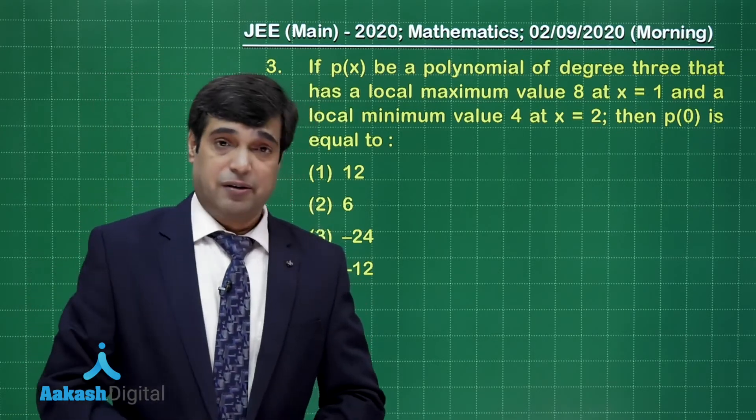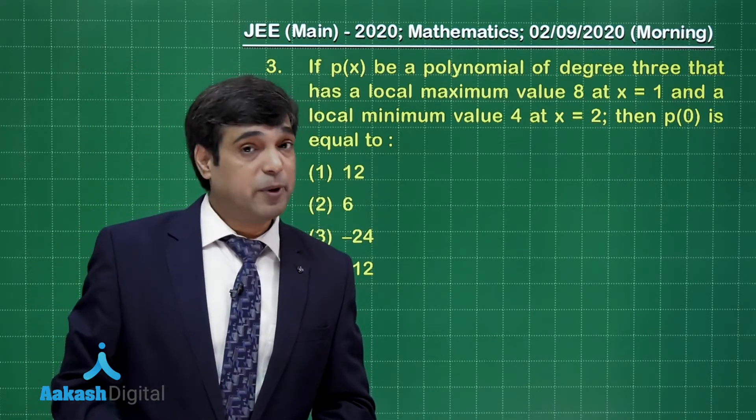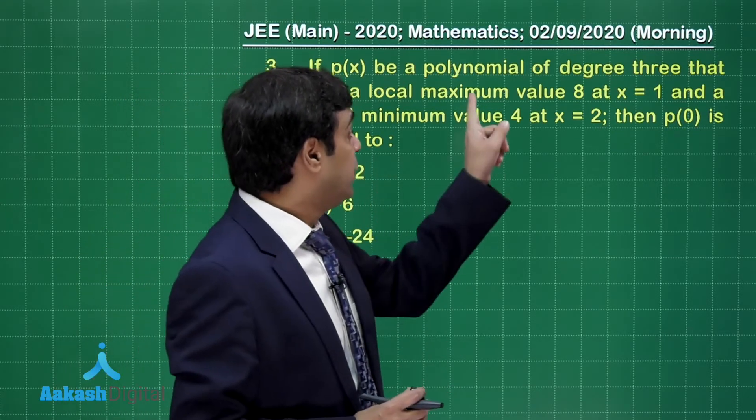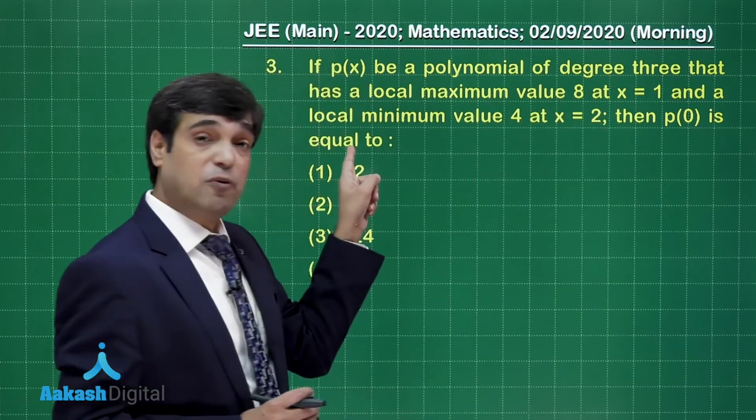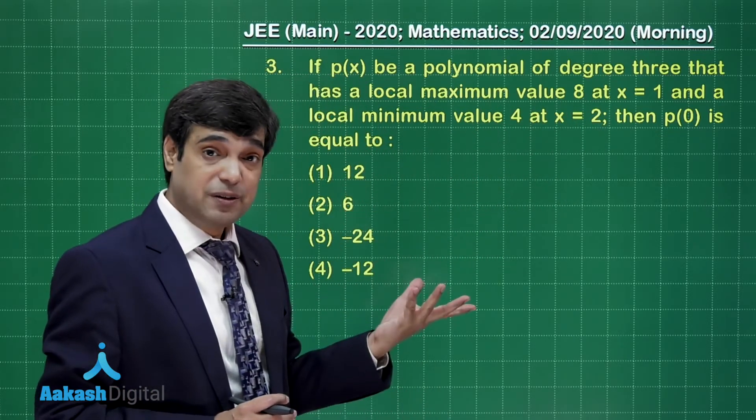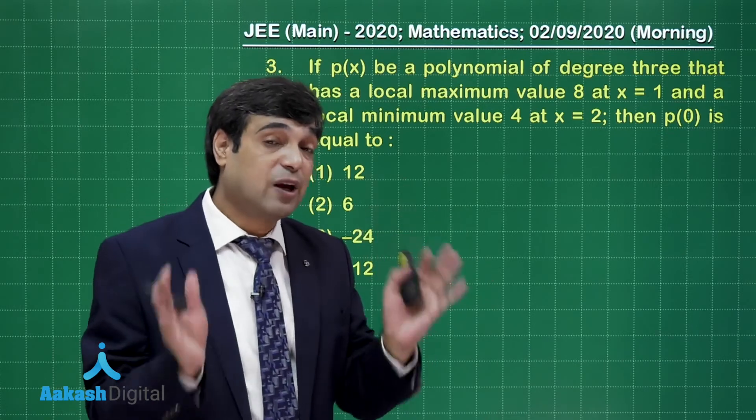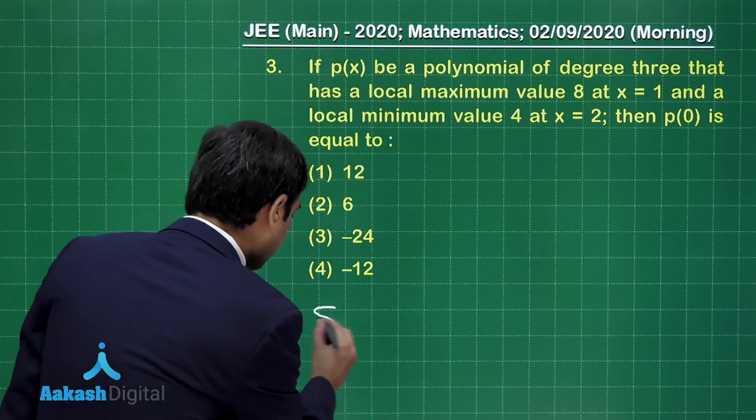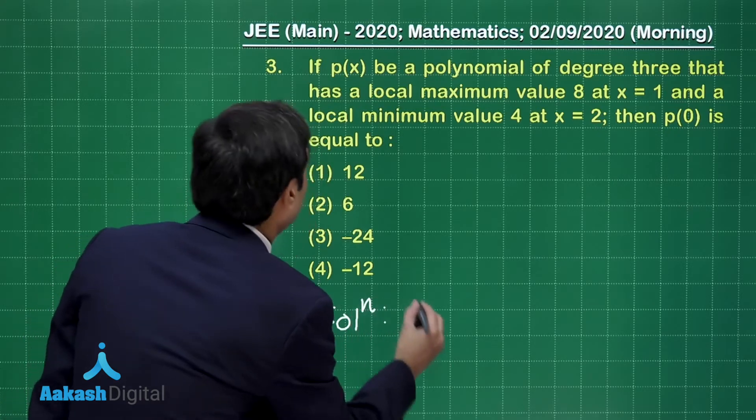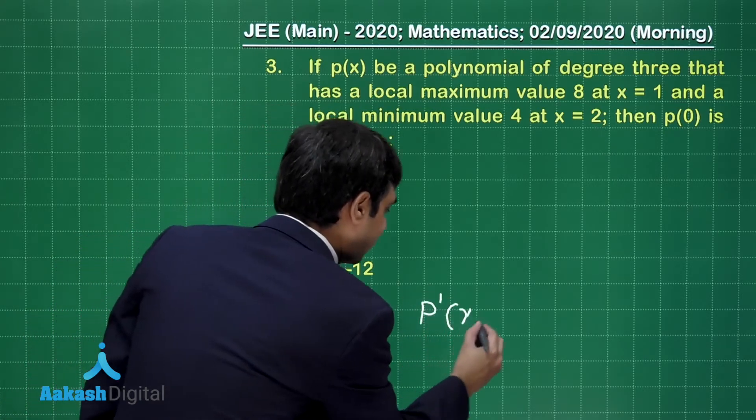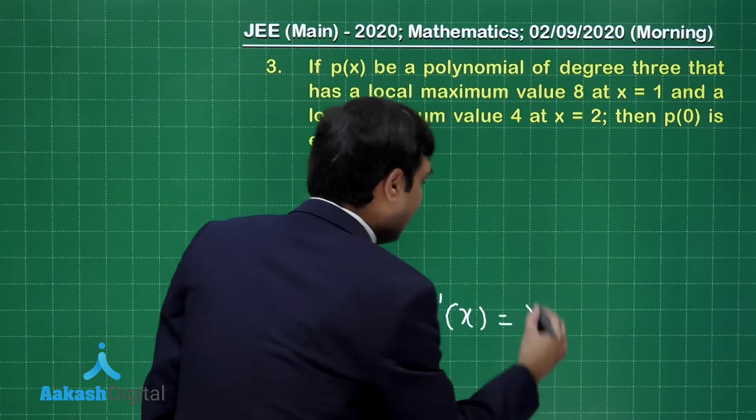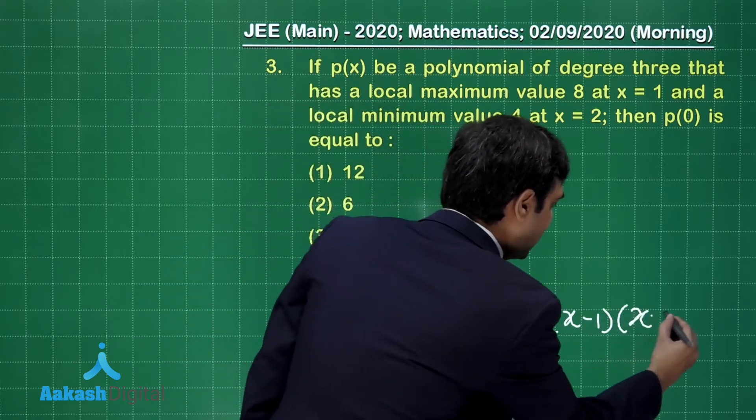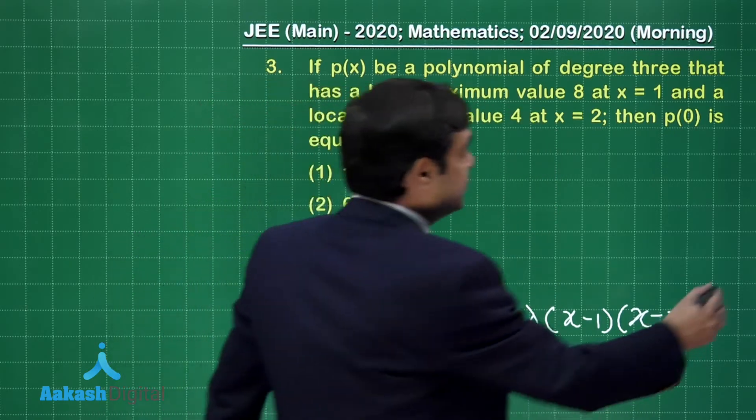p(x) is a polynomial of degree 3. When you take its derivative, it will be of order 2. The derivative's degree is 2. We also know that these are the two points of maxima and minima, the extremes. So what is the possible equation of derivative? We can write p'(x) = λ(x - 1)(x - 2).